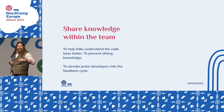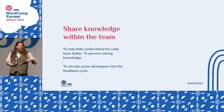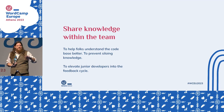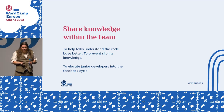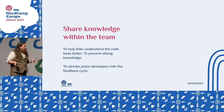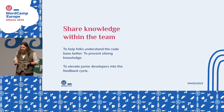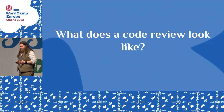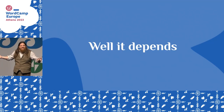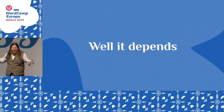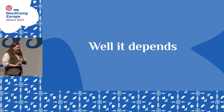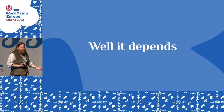Junior developers also get to nitpick their boss, which, depending on your personality, is a positive or a negative. So with the why covered, what does a code review look like? Well, it depends, because every organization is different, and where we put it in the cycle matters.